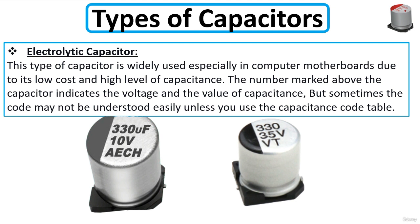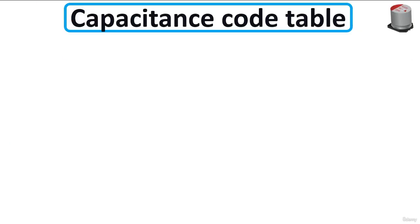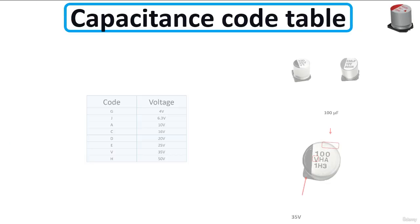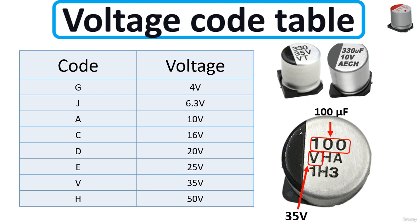But sometimes you can find some electrolytic capacitors that have a strange code that you cannot understand easily. That's why we should use the code table.